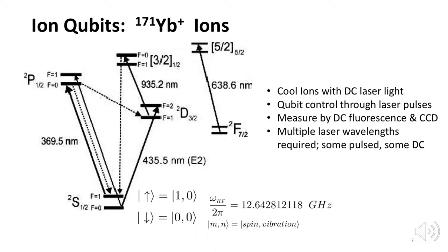Ion qubits employ ground-state energy levels of an ion for qubit states, like the 2s states of this isotope of ytterbium. Ions must first be loaded into an RF electromagnetic trap in ultra-high vacuum. Lasers of different wavelengths, depending on the ion, are used to move the trapped ion out of metastable non-computational states, like the F and D states in this example. Then the ions are cooled to micro-kelvin temperatures by a laser tuned to a Raman transition, so they are not vibrating in the trap.